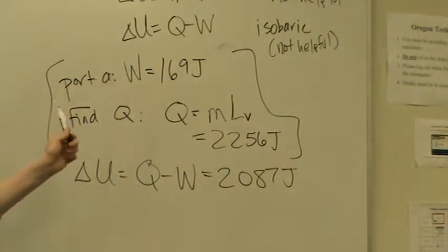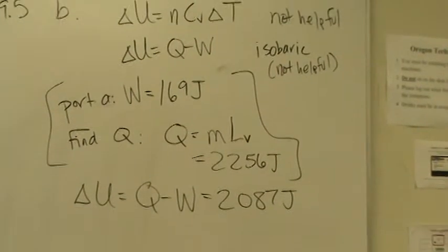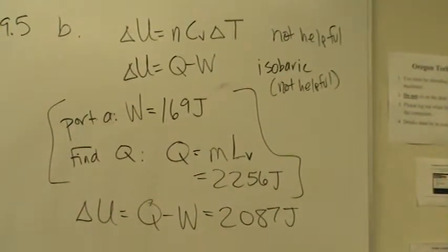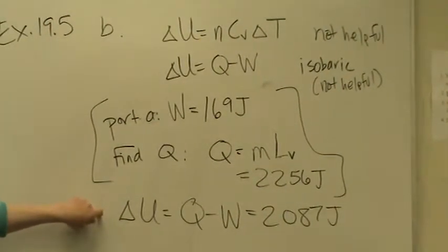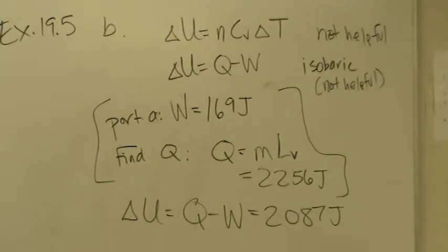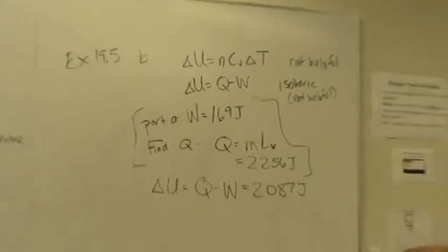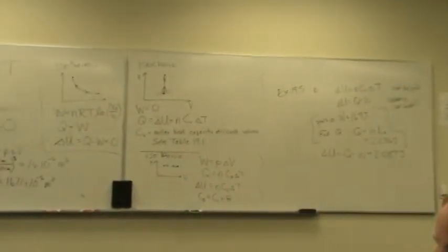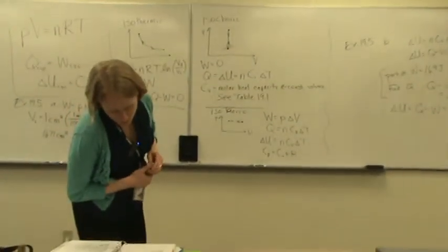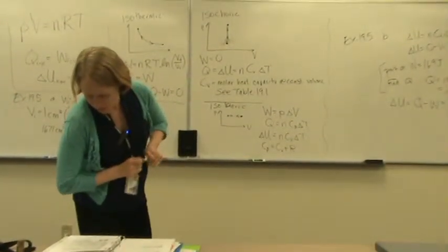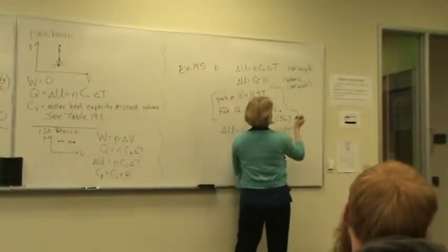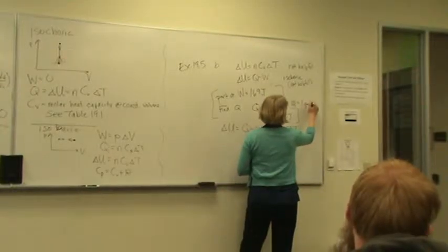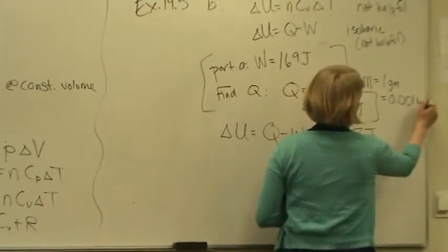So then plugging in Q and W, two two five six minus one six nine, they tell us that it's two thousand eighty-seven joules. This is a really common tactic. So put that in your bag of tricks. If you are looking at a problem and you're like I don't have enough information, I don't have the numbers to plug in here, consider this backdoor method we're seeing here as an alternative way to solve these variables. So the mass that goes in there into this term is one gram which is zero point zero zero one kilograms.